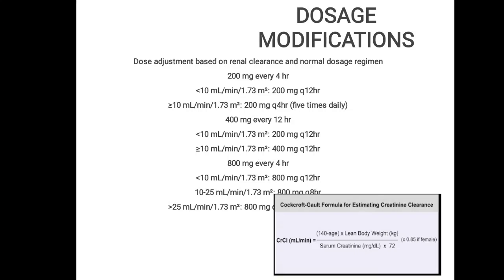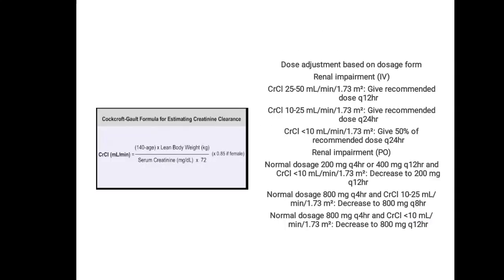To find creatinine clearance, the formula — visible on the right-hand side — is: (140 minus age) multiplied by lean body weight, divided by serum creatinine multiplied by 72. If the patient is female, multiply the answer by 0.85. Dosage adjustment is then based on renal impairment using this calculated creatinine clearance.